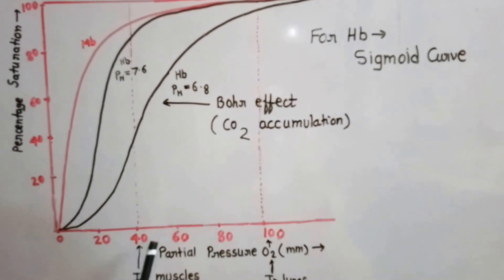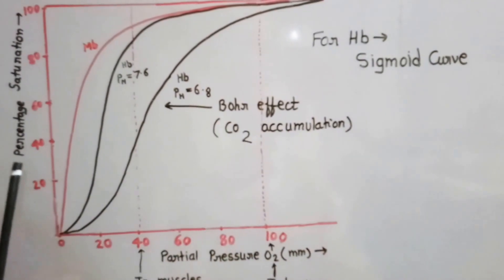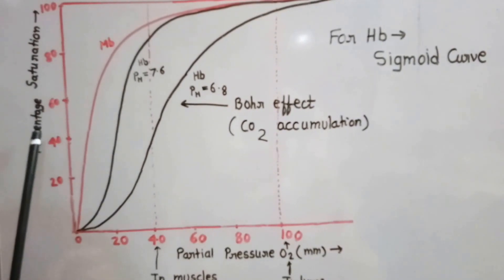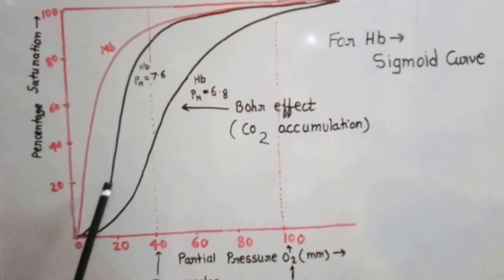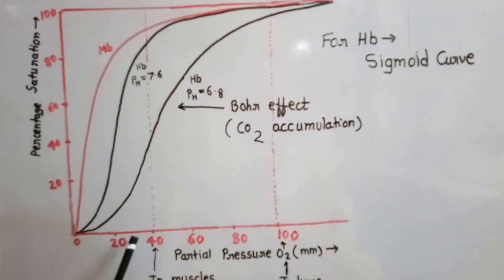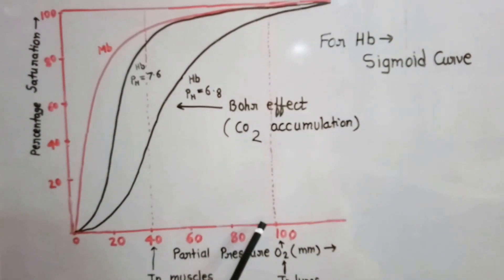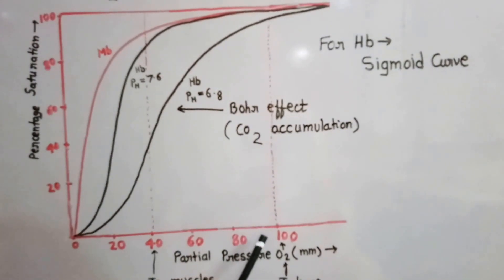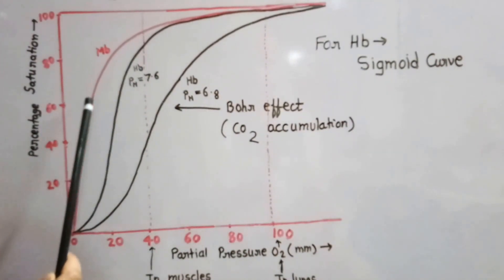In the oxygen binding curve, we have plotted the partial pressure of oxygen on the x-axis and the percentage saturation of hemoglobin or myoglobin on the y-axis. In this curve there are two reference lines: one showing the partial pressure of oxygen in the muscles, and one showing the partial pressure of oxygen in the lungs, which is 100 mmHg — higher than in the muscles.